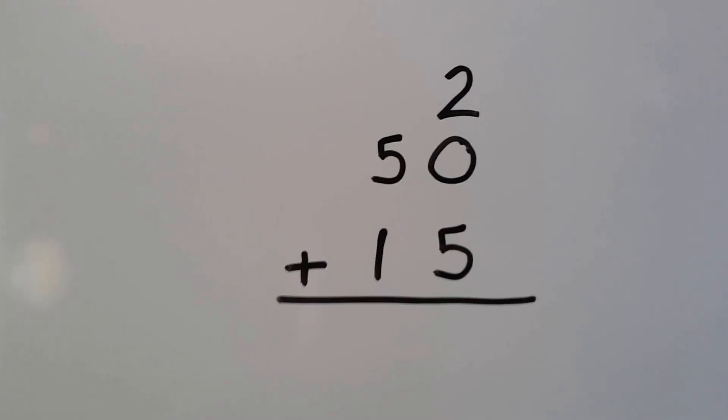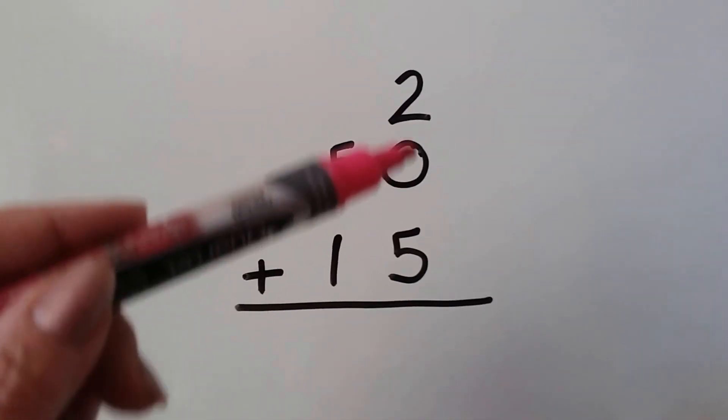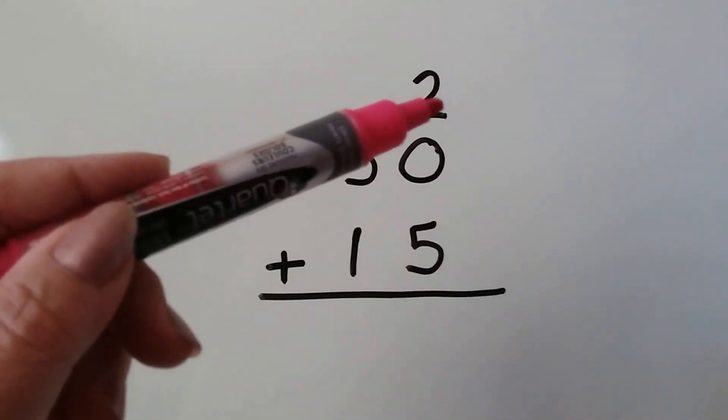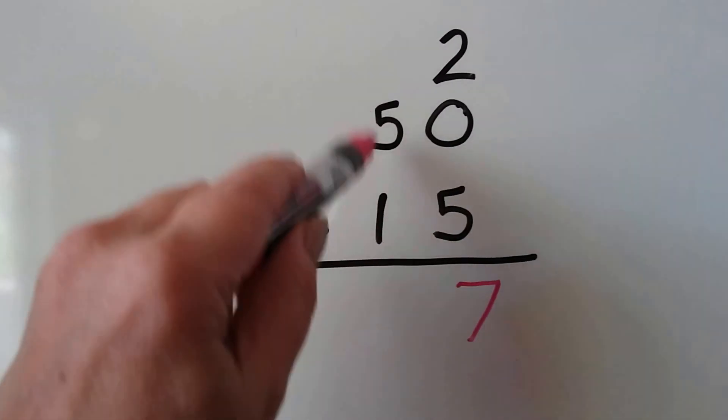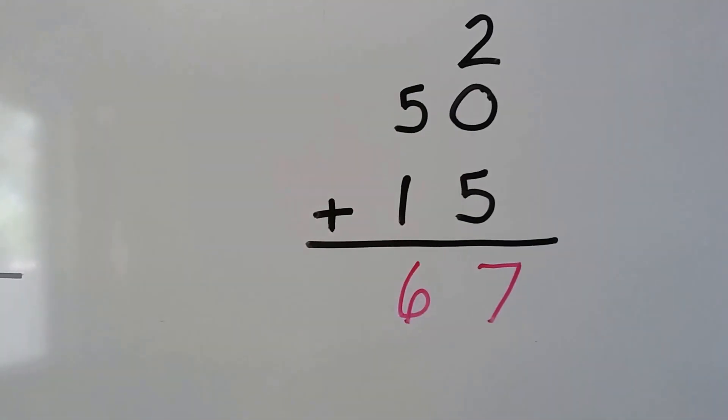Let's try it again. Do you think we need to regroup in this one? We have a 5, a 0, and a 2: 5, 6, 7. No, we don't need to regroup. 5 and 1 is 6. That was an easy one, wasn't it?